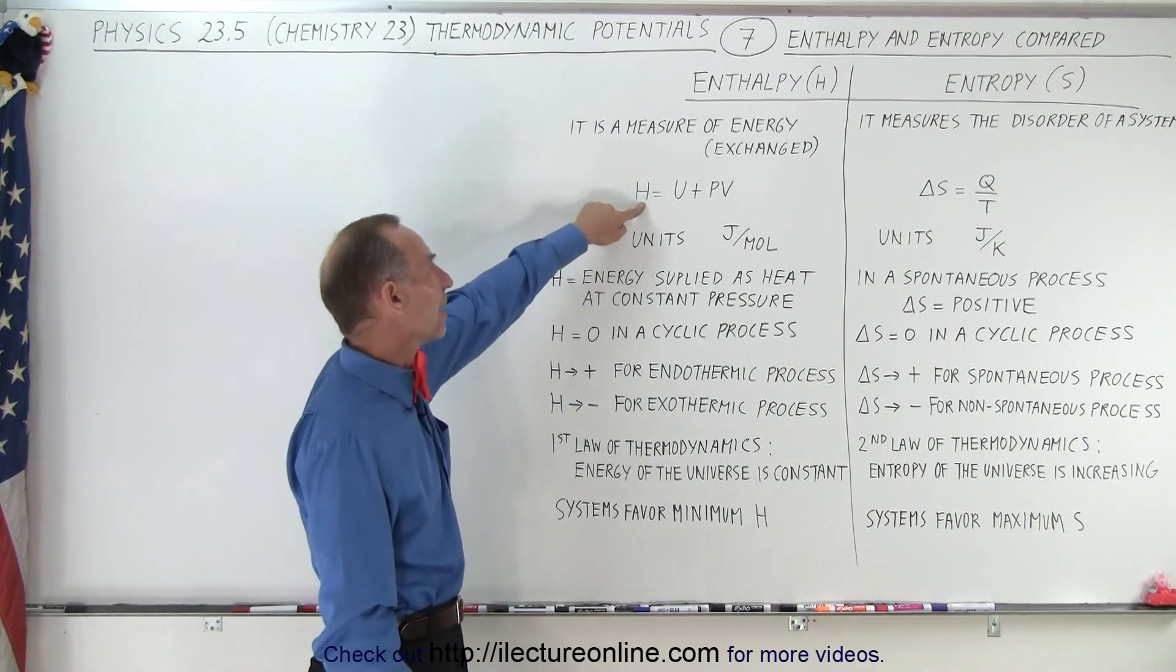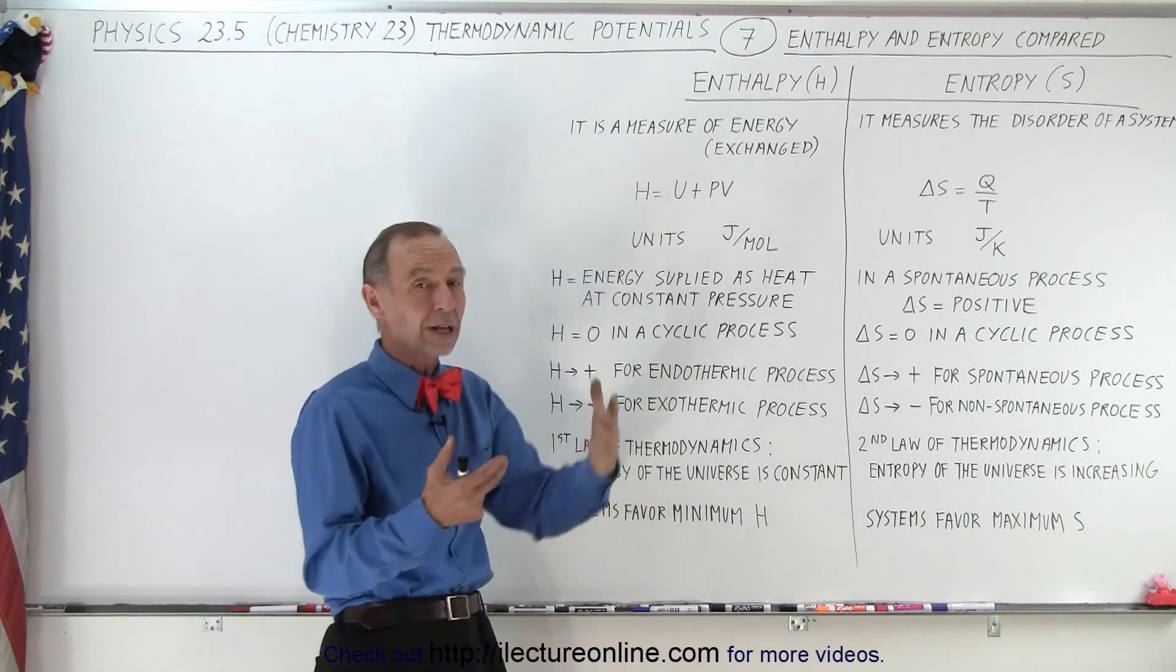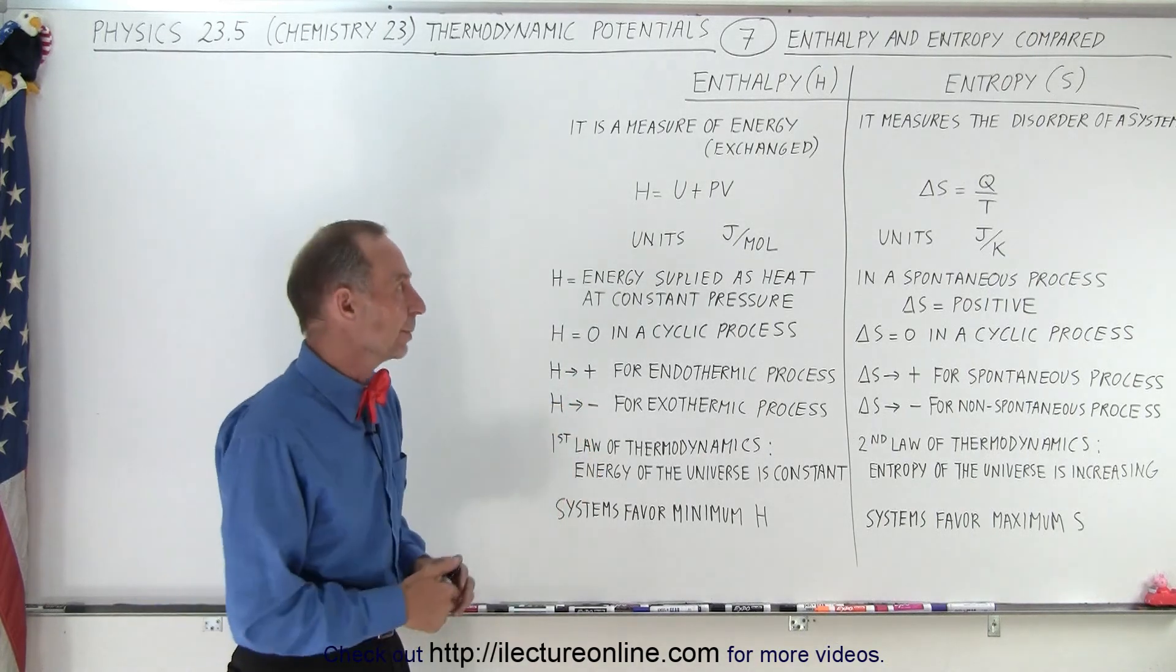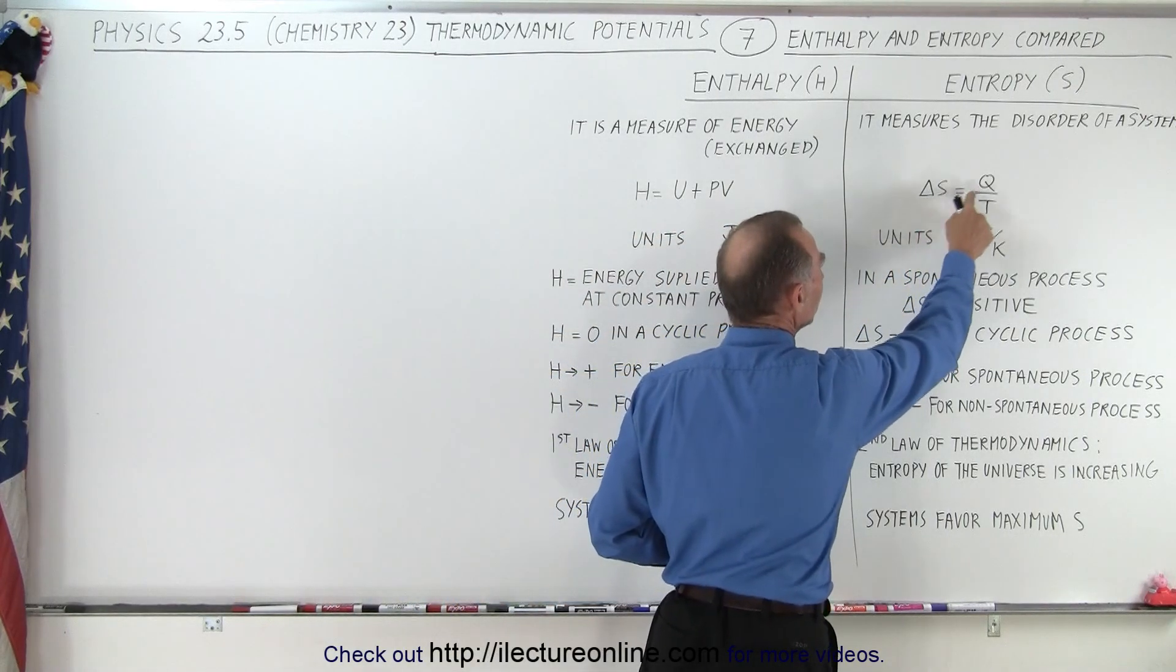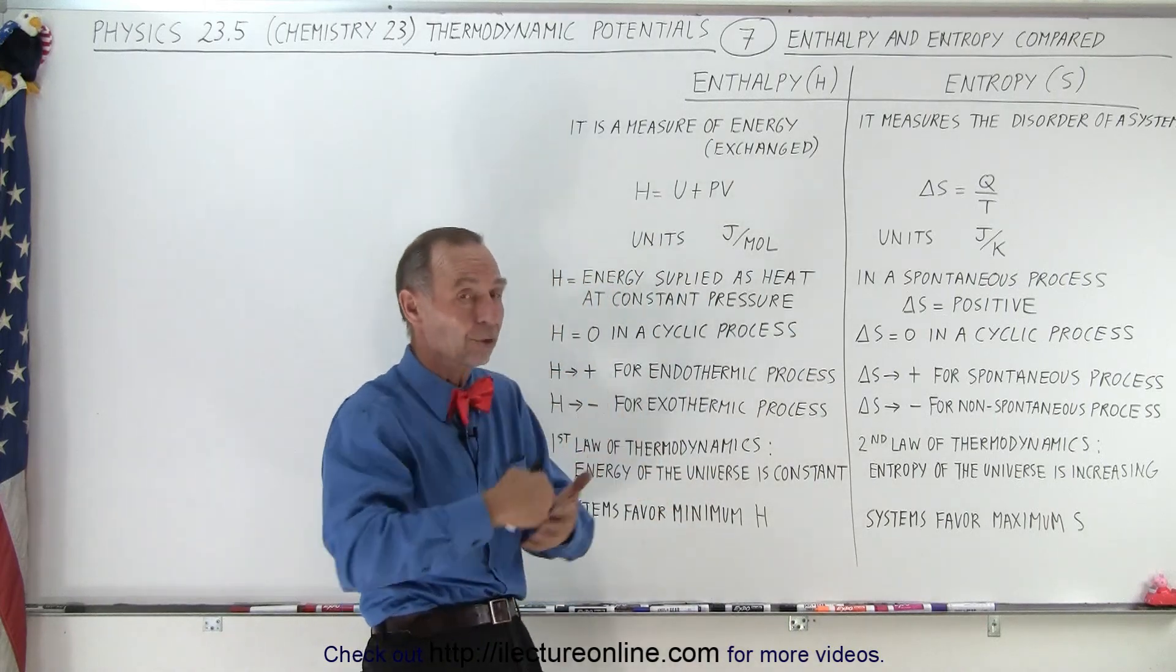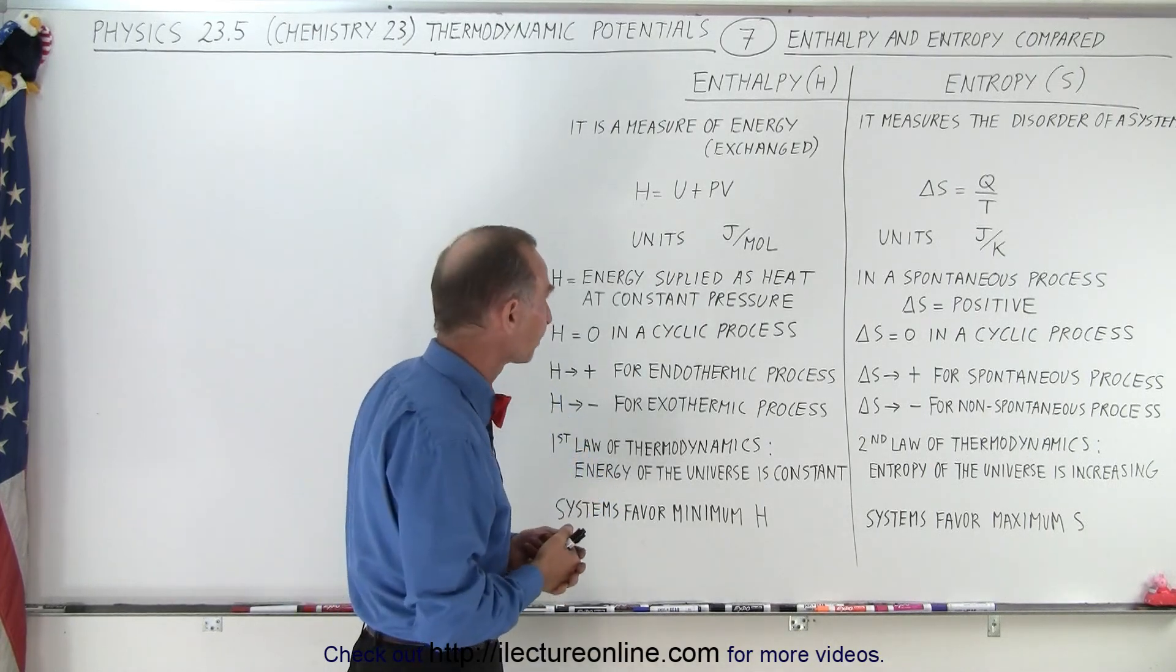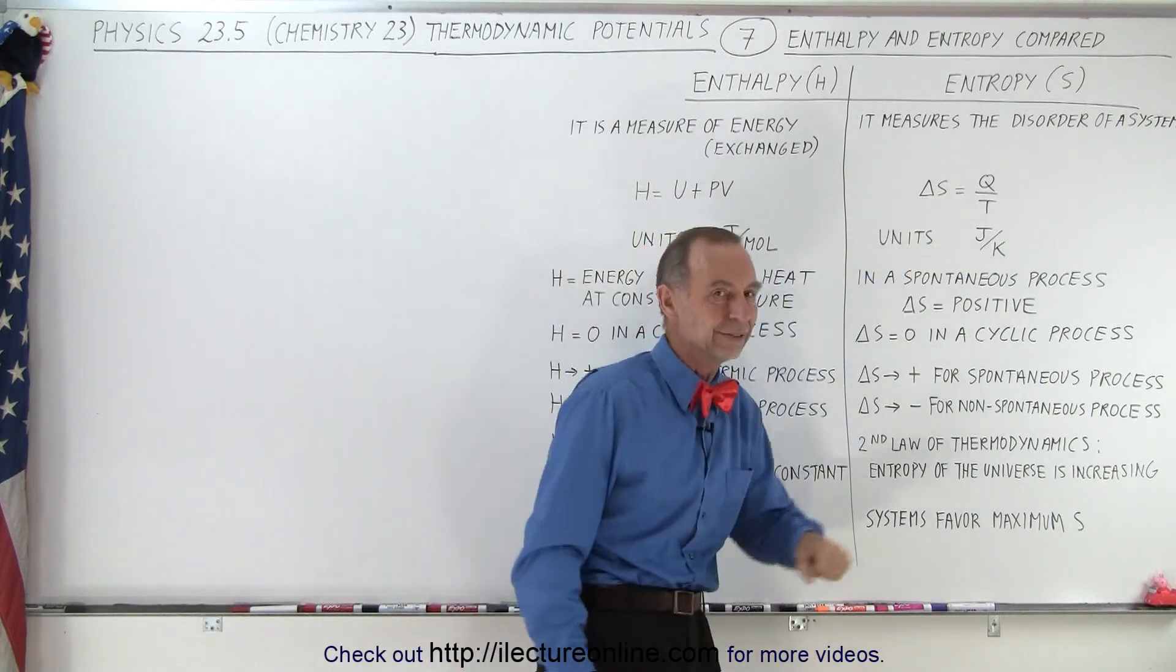The equation says that enthalpy is equal to the internal energy of a system plus the product of P times V, which essentially represents the energy needed to expand the system against the environment. Notice that the change of entropy is simply equal to the heat exchanged between two systems divided by the temperature at which this happens, and it turns out that the sum of those changes always end up being positive. The units are joules per mole, where the units here are joules per kelvin.